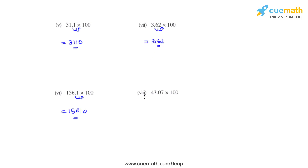Coming to the eighth bit, we have 43.07 multiplied with 100, so the decimal again will be moving two places towards the right, and the answer that we get is 4307.